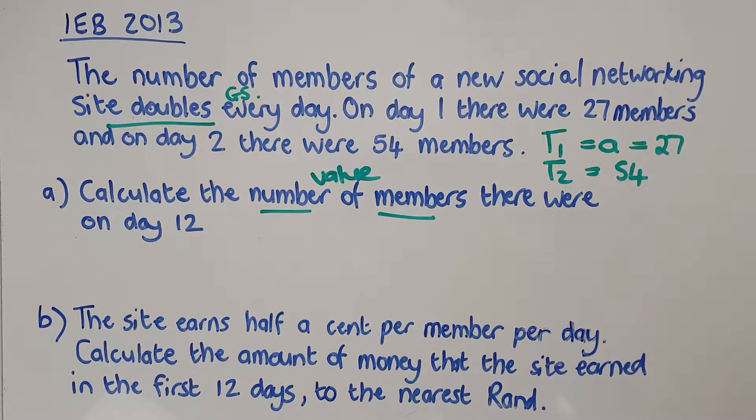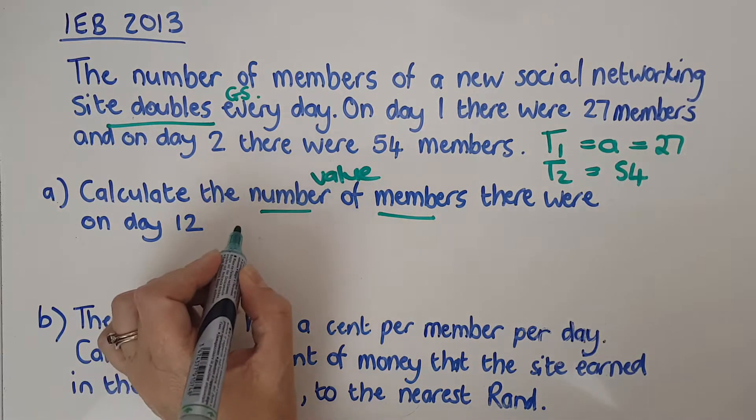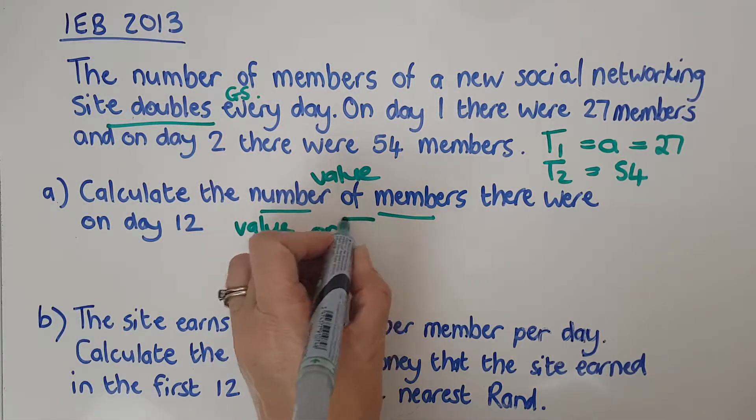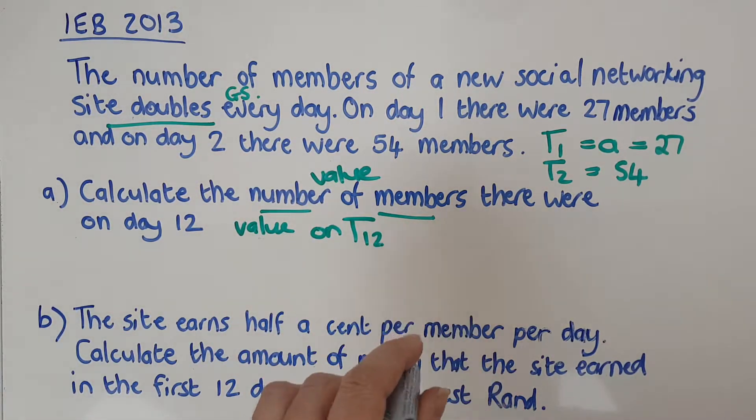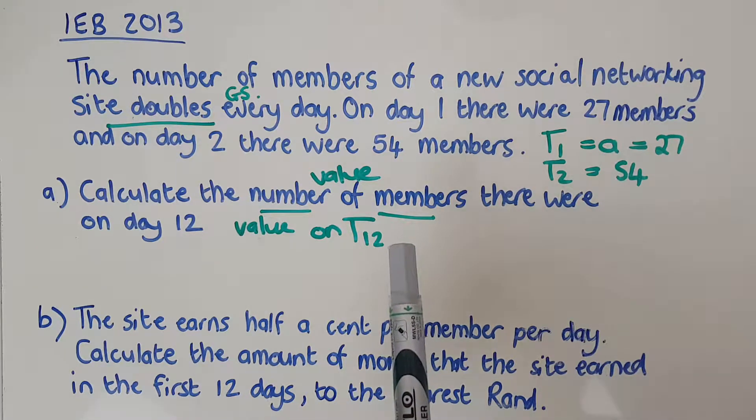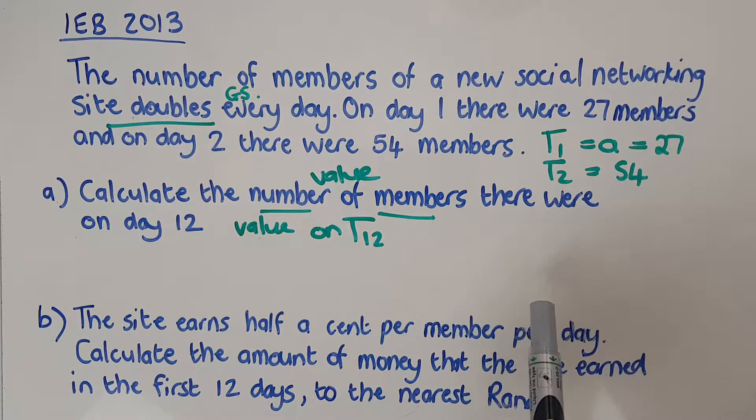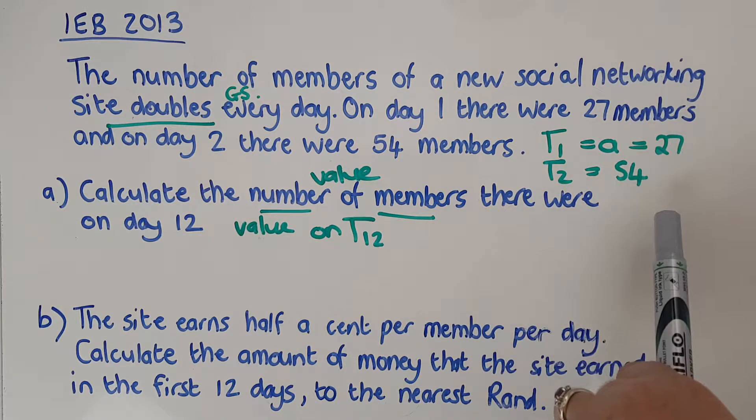I want the number of members on day 12. So what I want is I want to know what is T12. So I want the value at T12. So do I have A? Do I have R? I'm going to need to get that over there.